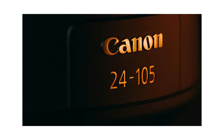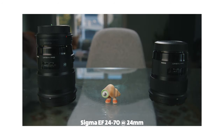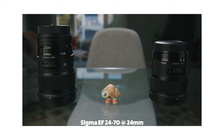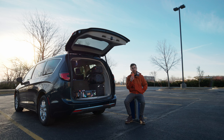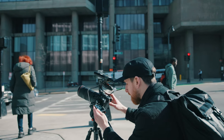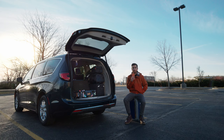In my initial review of the 24-105mm, I discovered that at 24mm, this lens appeared suspiciously tighter than all other 24mm lenses. There were a bunch of theories in the comments, all of which I looked into, and in this video I'll show you what's really going on.